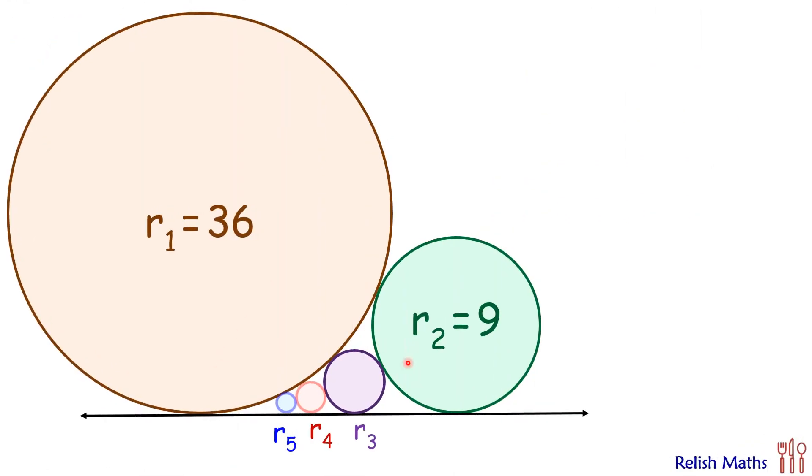So here these two circles are touching each other and this is the third circle which we had drawn here. So using the formula 1/√r3 = 1/√r1 + 1/√r2, putting the values of r1 as 36 and r2 as 9, we get 1/√r3 = 1/6 + 1/3. Solving it further we will get r3 as 4 cm.